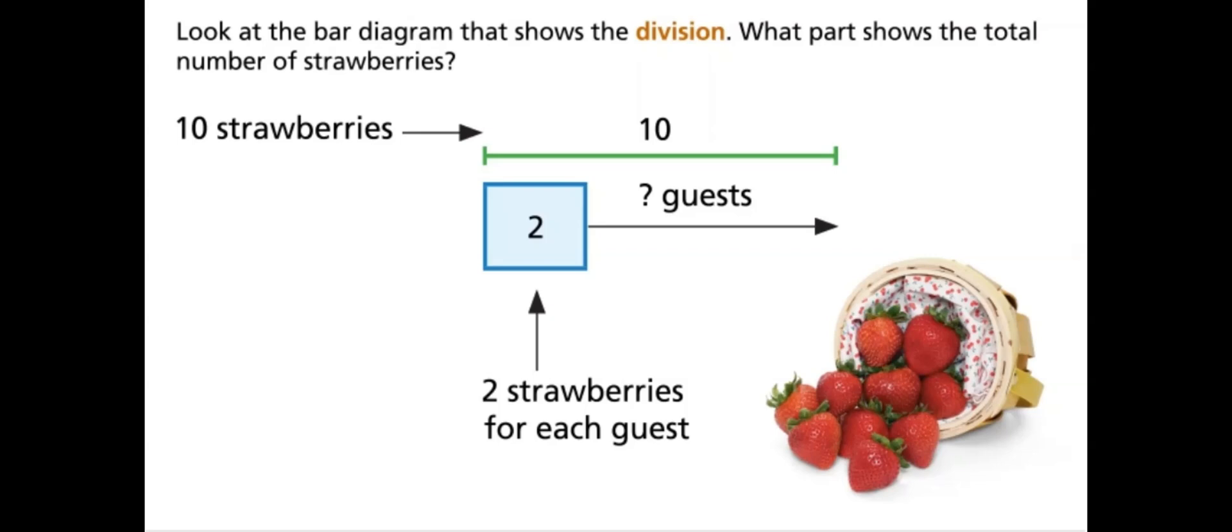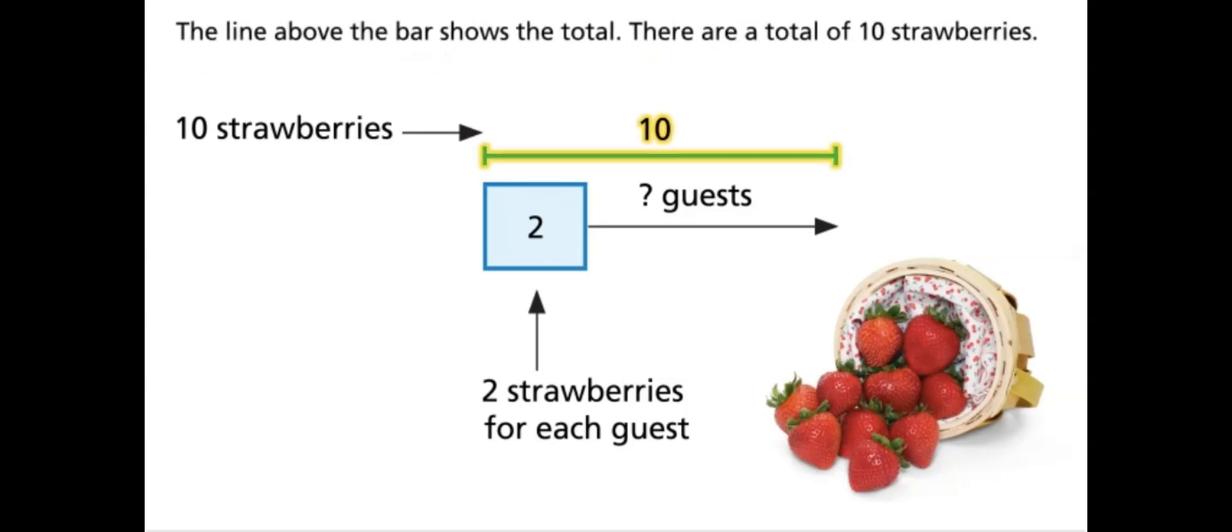Look at the bar diagram that shows the division. What part shows the total number of strawberries? The line above the bar shows the total. There are a total of ten strawberries.